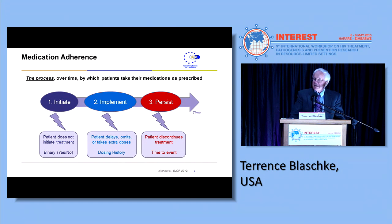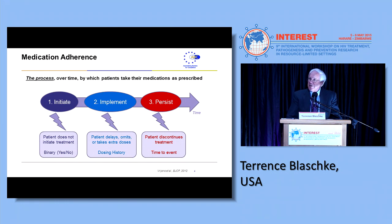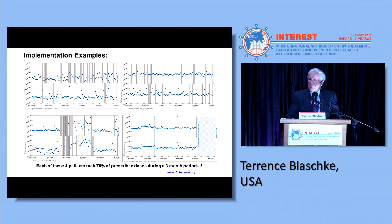The third component is called persistence — it's the time to event, that is, when a patient decides either consciously or unconsciously to stop. We see examples of somebody who is pretty good in terms of timing but then has a fairly extensive drug holiday halfway through a three-month period, followed by more erratic behavior. In the lower right-hand panel, someone takes doses very regularly and then stops. If we just look at percent adherence, all of these individuals had 75% adherence to the prescribed doses, yet the impact of these different patterns might have substantial effects on outcome.